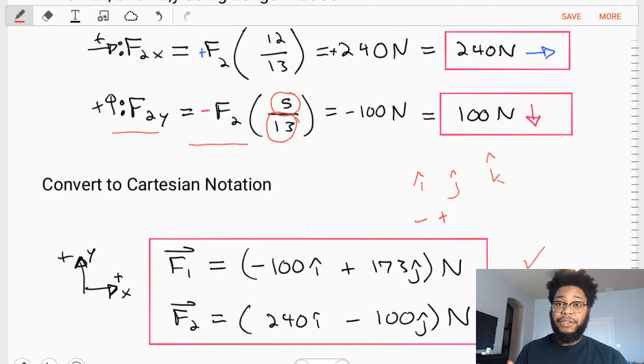So this example is fairly straightforward, where we're doing things where we're just taking a vector and breaking it down into its components and getting it into Cartesian notation. As we move forward, there can be even more complicated types of examples. Say you have two vectors, you need to find a single resultant vector in Cartesian notation. Those type of things start to arise as we move forward in this chapter and other examples. So make sure you get this example down pat, and then I'll see you in the next example video.